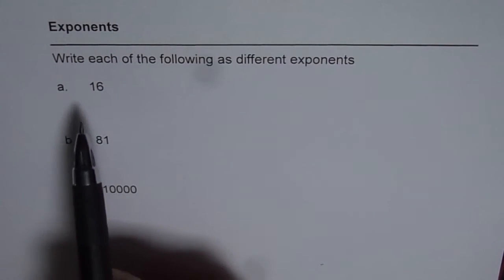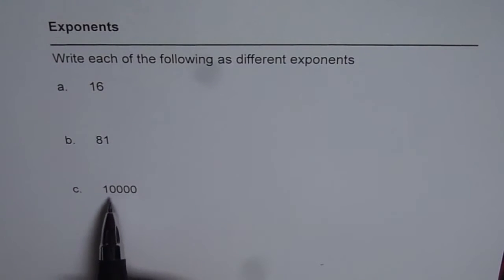We have three examples here. Numbers given to us are 16, 81, and 10,000. Now when we have to write a number as an exponent with a different base, what should we do?